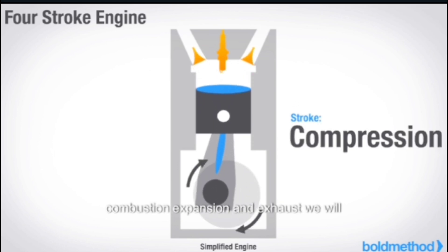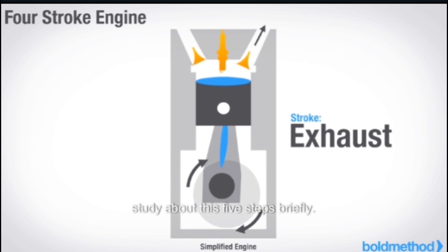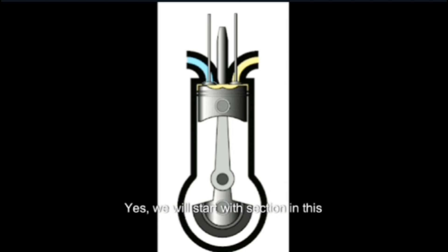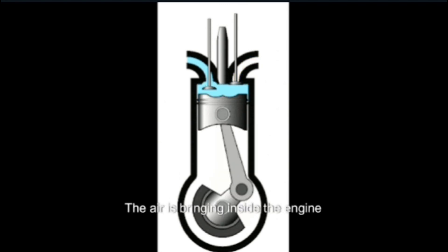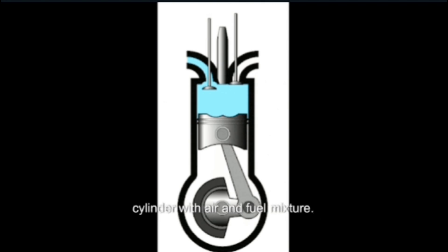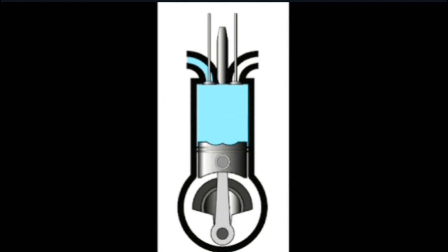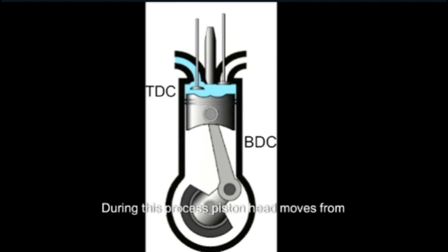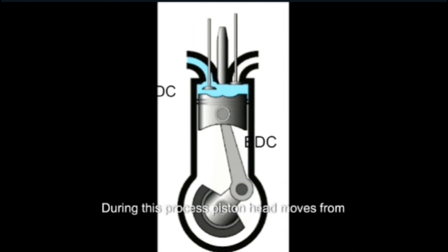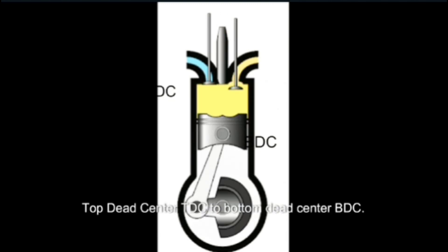We will study these five steps briefly. First, we will start with suction. In this step or process, air is brought inside the engine cylinder. After completely filling up the engine cylinder with the air and fuel mixture, the inlet valve is closed. Now the engine cylinder is totally filled with the air and fuel mixture. During this process, the piston head moves from Top Dead Center (TDC) to Bottom Dead Center (BDC).